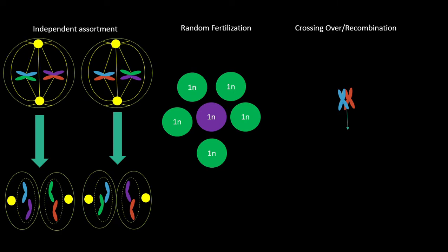Next is meiosis and genetic diversity. First off is independent assortment. Chromosomes can line up any which way at the metaphase plate. This randomness leads to genetic diversity as there are many combinations of chromosomes that could end up in the gametes. It all depends on where the spindles attach to the chromosomes and how the chromosomes are aligned at the plate.